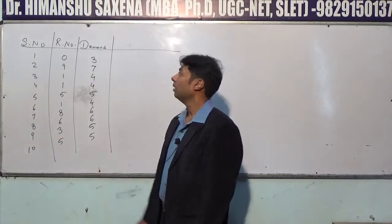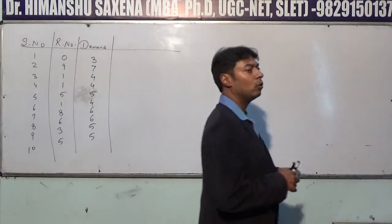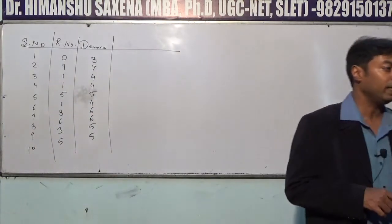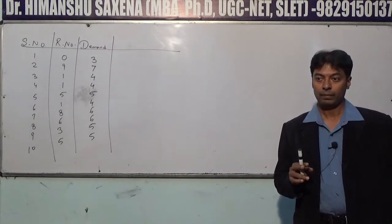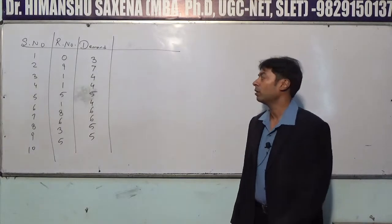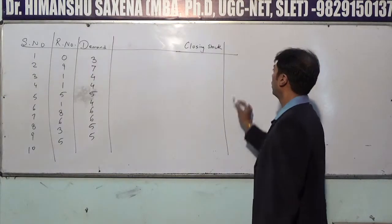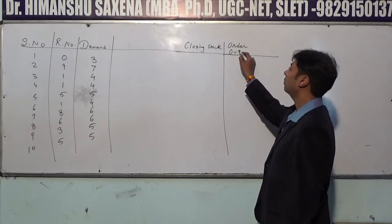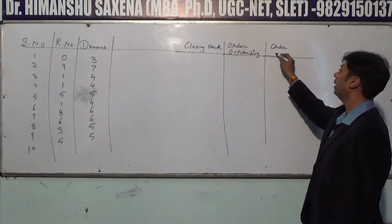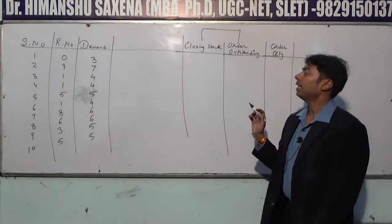Now the key rule: you have to order 15 units whenever the closing stock plus orders outstanding is less than or equal to 15. So whenever the combined total of closing stock and outstanding orders falls below 15, you place an order of 15 units. The ordering quantity is always 15.